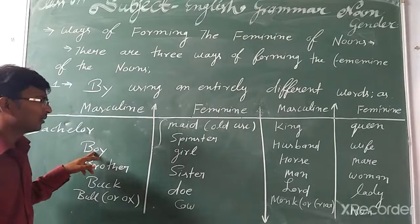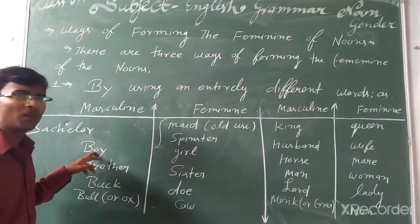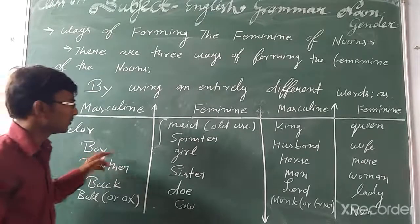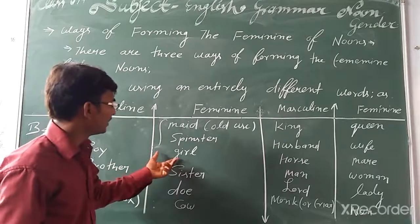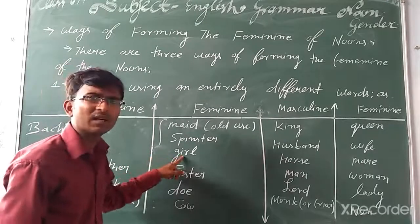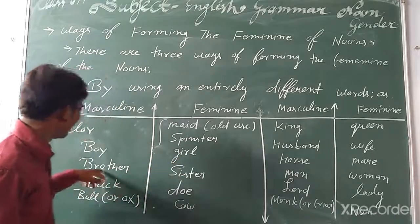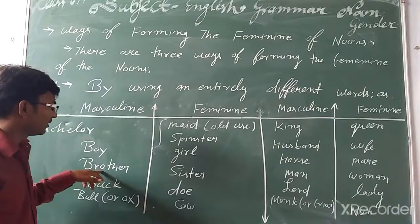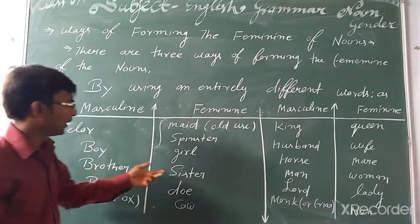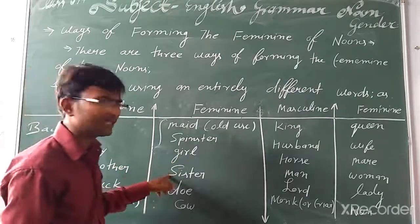The second example is 'brother'. The feminine gender for brother is 'girl' — or more correctly, the feminine gender is 'sister'.